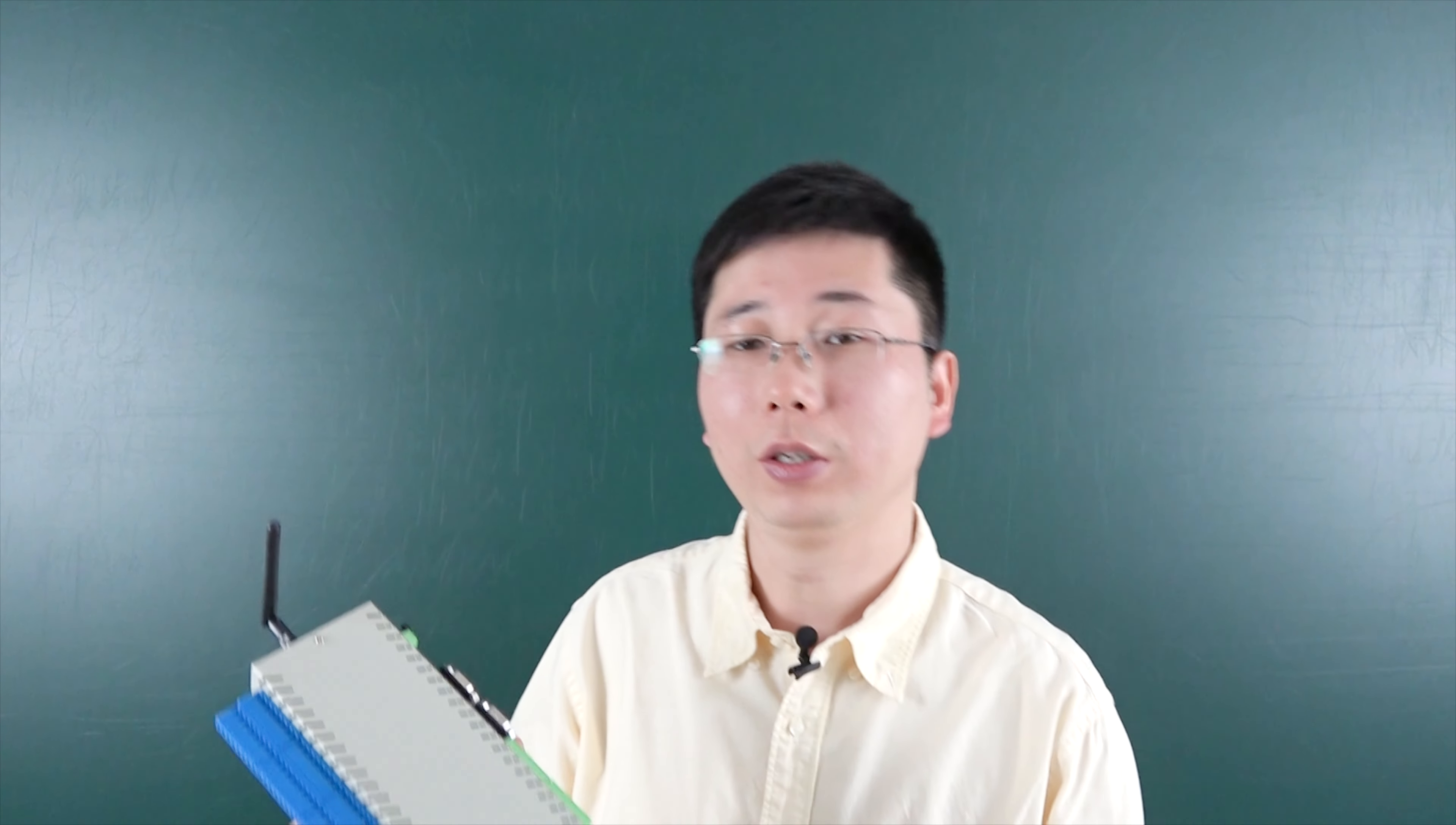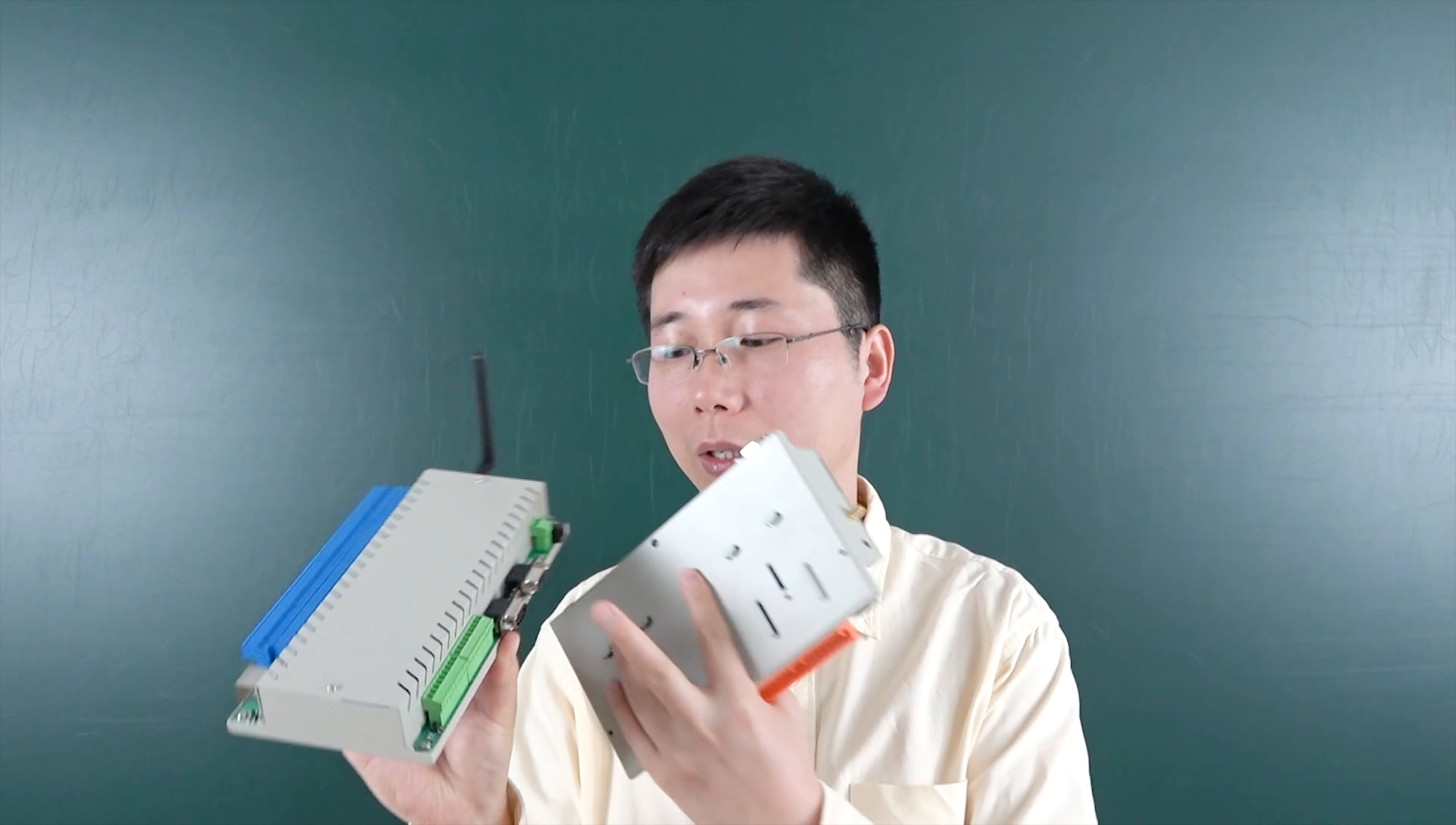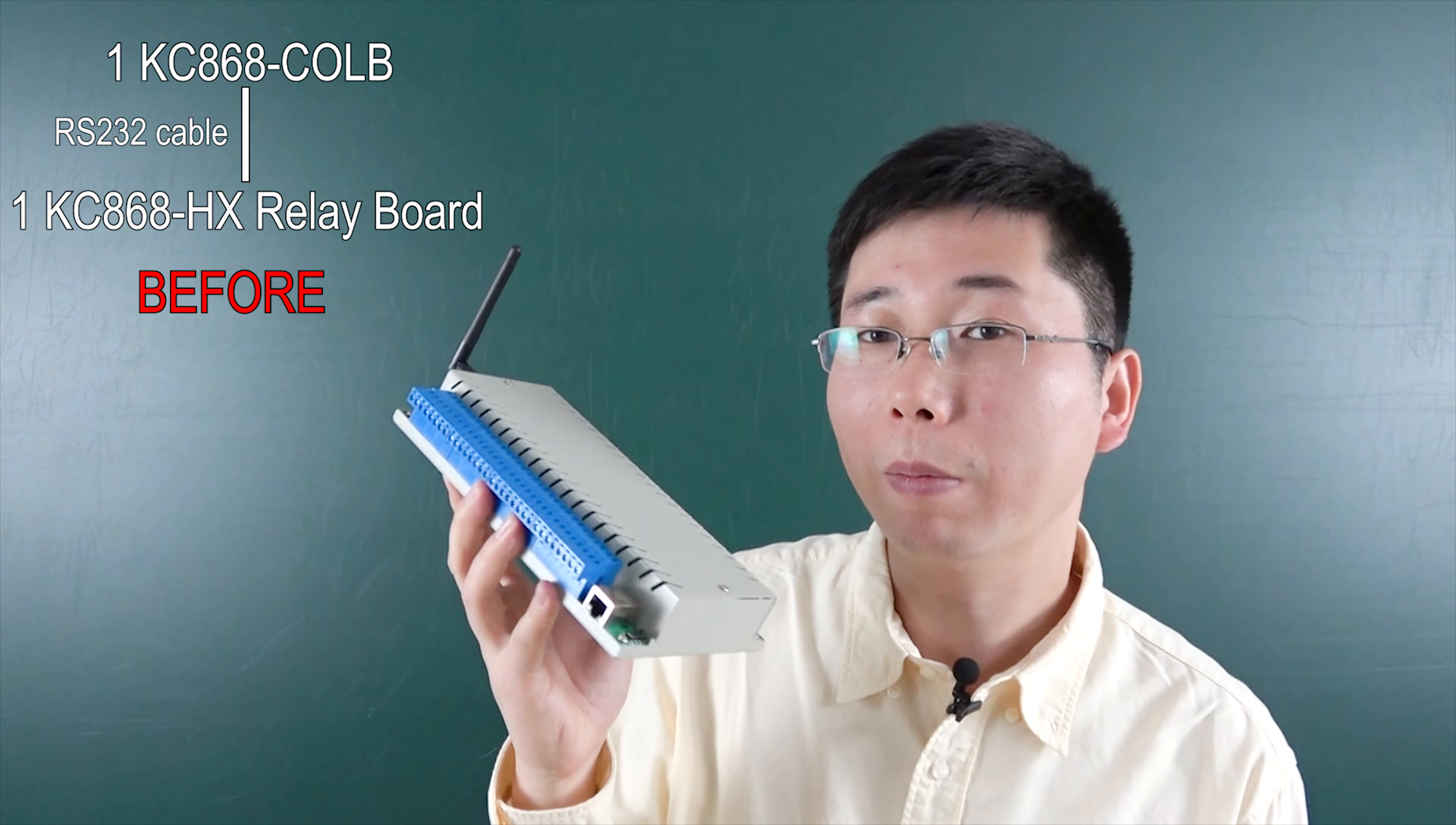Before, if you had one serial device like the H32B or H32, you needed to use an RS-232 cable to connect with it, and one serial port could only control one relay board. But now we have updated this.